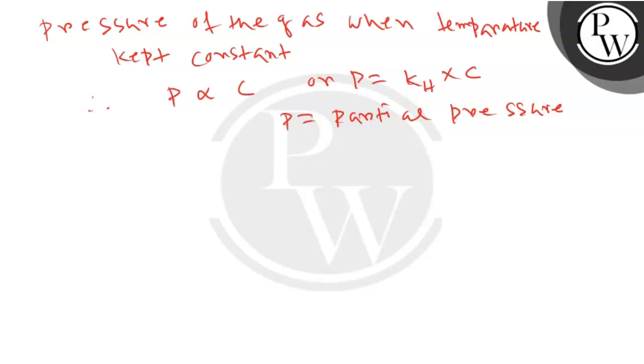C is the concentration of dissolved gas, and KH is the Henry's constant.